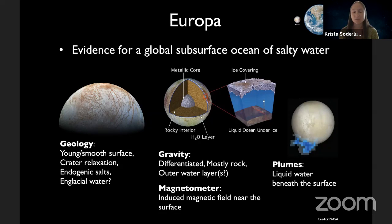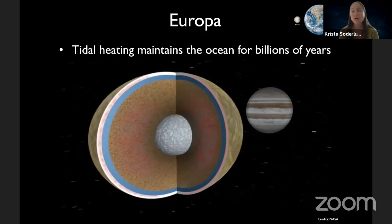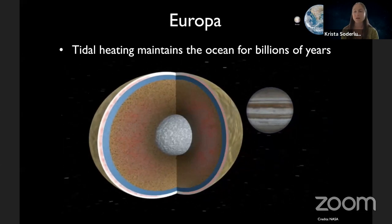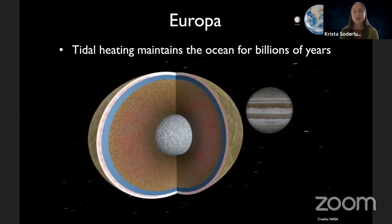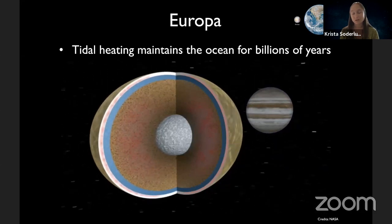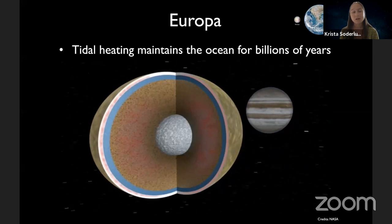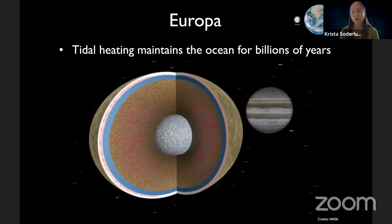Gravity measurements from spacecraft flying by Europa tell us it is differentiated into a central iron core, a rocky mantle, and an outer hydrosphere of water, though we can't distinguish whether it's liquid or solid. The best evidence for a liquid water ocean comes from the magnetometer — when Galileo flew by, it detected an induced magnetic field that can only be generated by something conducting and relatively near the surface, consistent with a salty ocean. More recently, observations of liquid water plumes erupting from Europa further support liquid water beneath the surface.